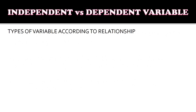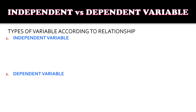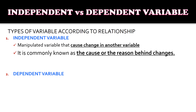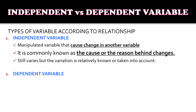Now let's have independent and dependent variables. There are two types of variables according to relationship: independent and dependent variable. An independent variable is the usually manipulated variable that causes change in another variable. It is commonly known as the cause or reason behind changes. It still varies, but the variation is relatively known or taken into account.